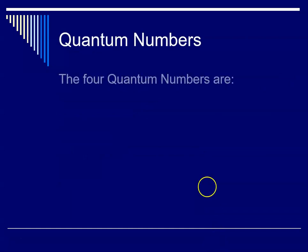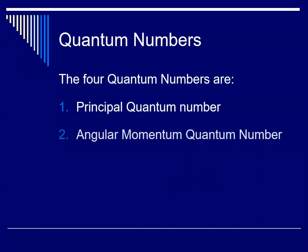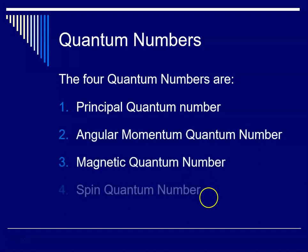The four quantum numbers are the principal quantum number, the angular momentum quantum number, the magnetic quantum number, and the spin quantum number. The next series of slides will explain that, so for now this is Miss Augustine signing off.